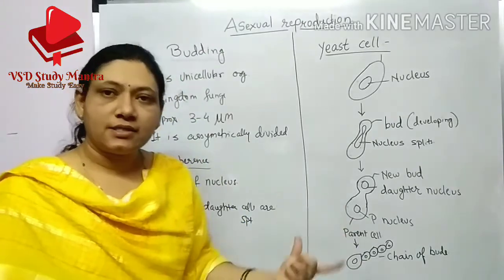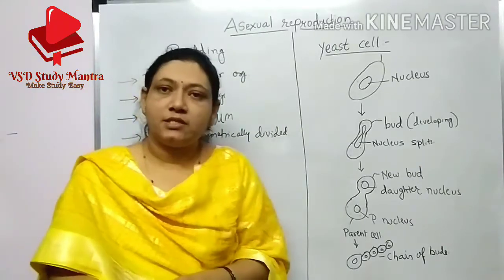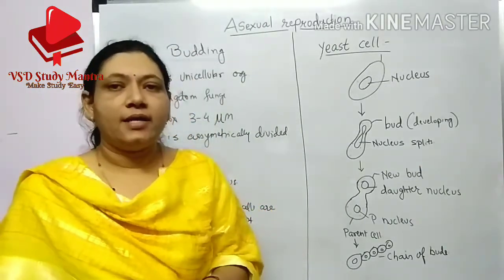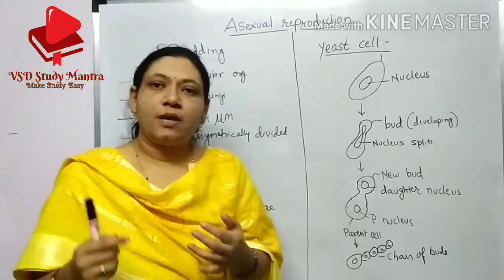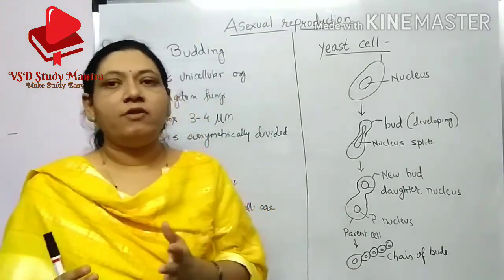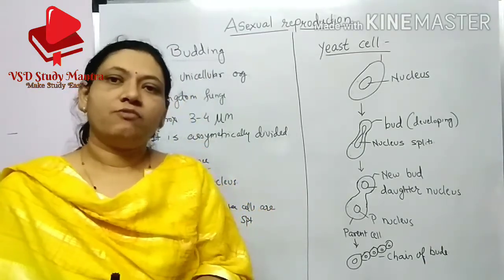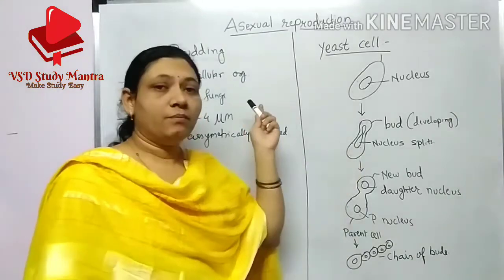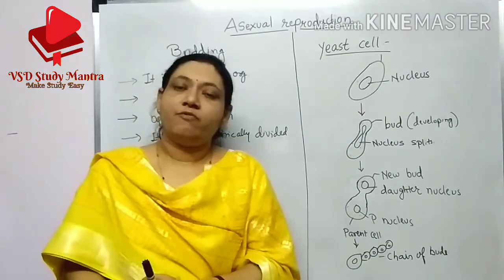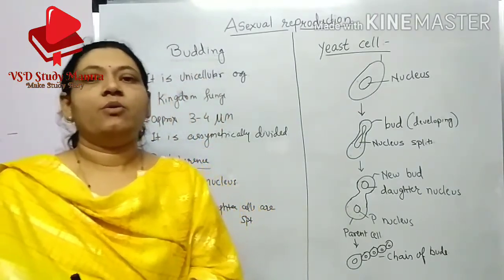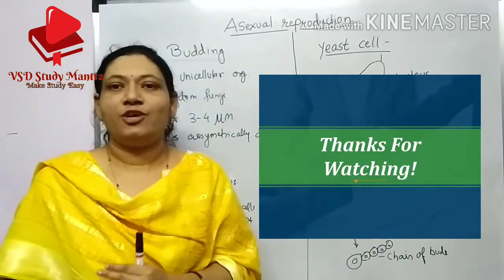This completes yeast cell budding. There are also plant species that reproduce asexually by budding — for example, potatoes and ginger. If you have any doubt, you can ask me or comment below. Thank you for watching, students.